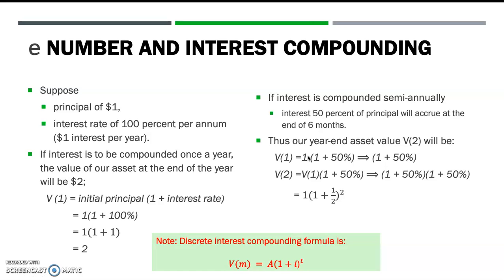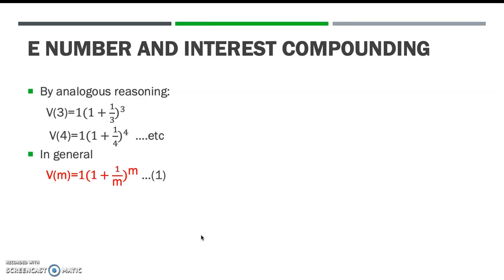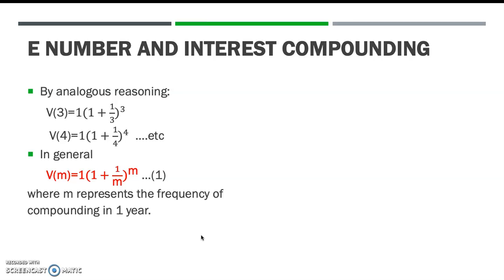At the end of the year, V2 equals the value at the end of V1, which becomes the principal for V2, times 1 plus 50%. By analogous reasoning, we can write the formula if compounded 3 times in a year, 4 times in a year, and so on. In general, we can formulate the interest compounding in one year as follows, where M represents the frequency of compounding in one year.